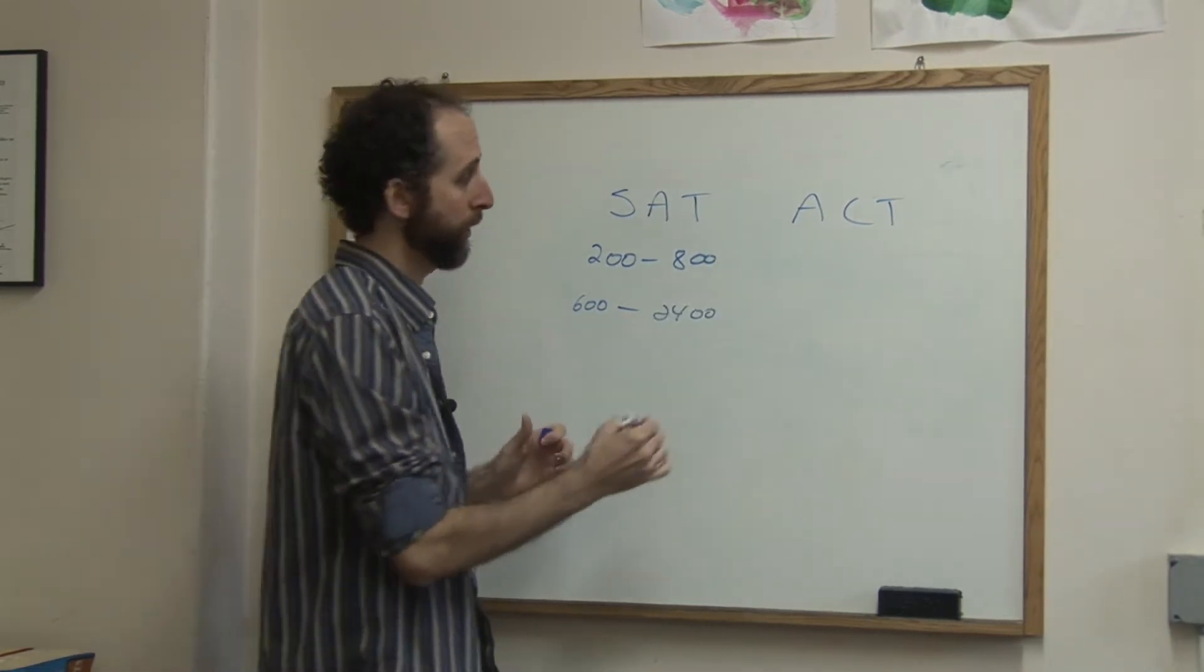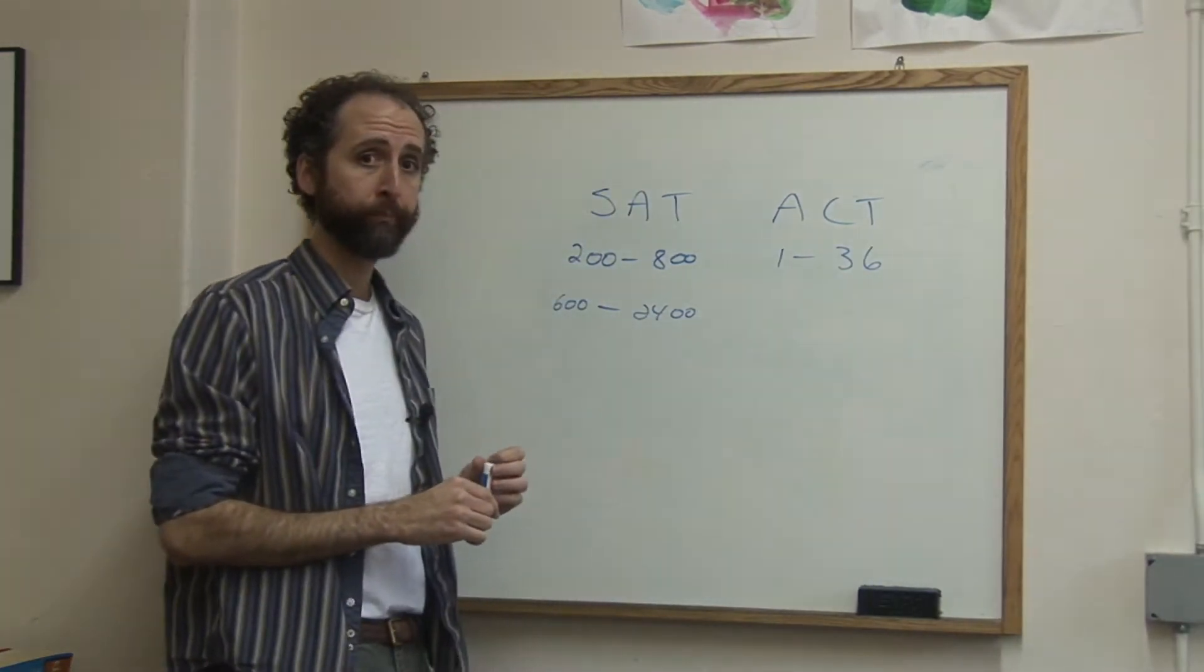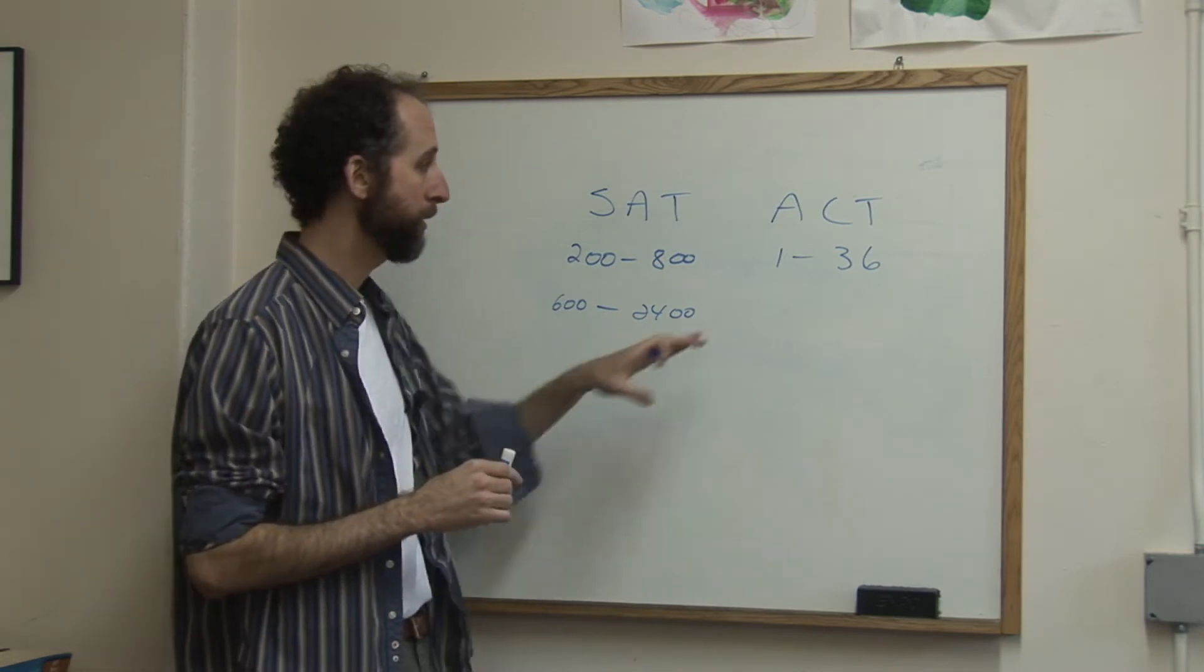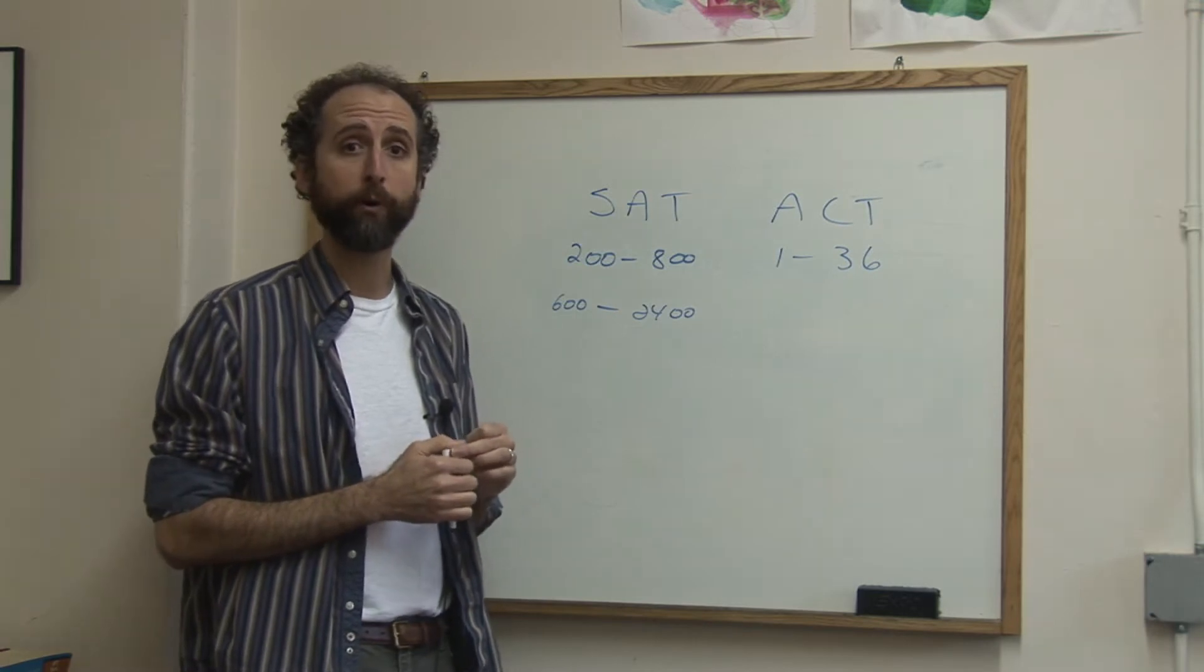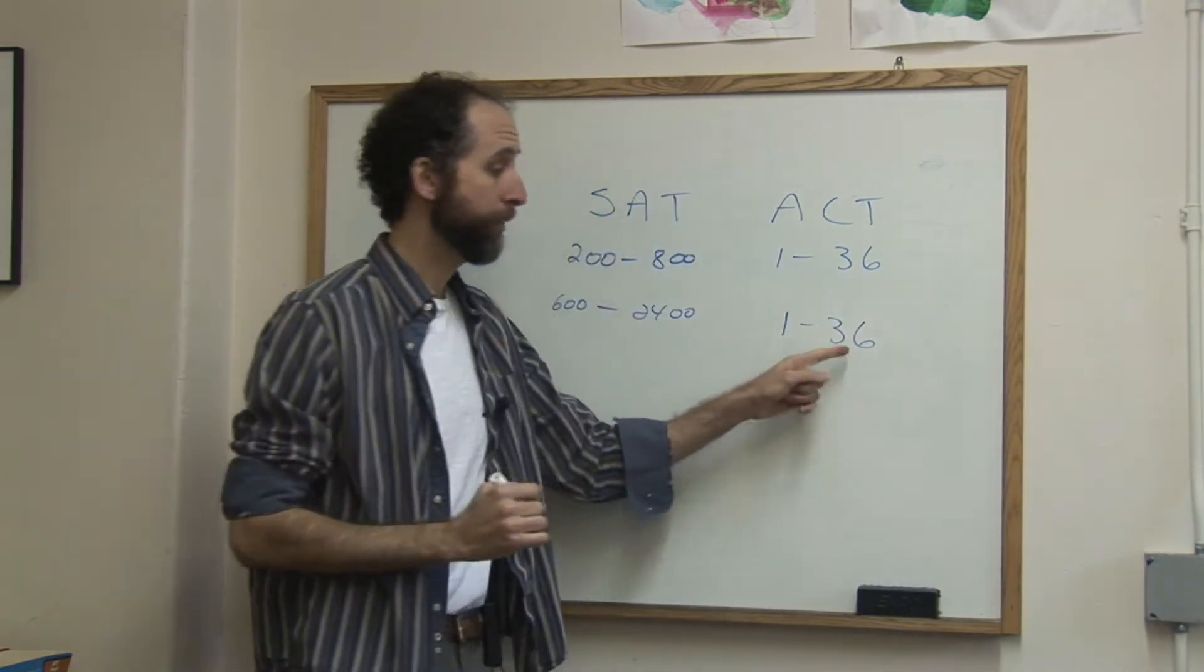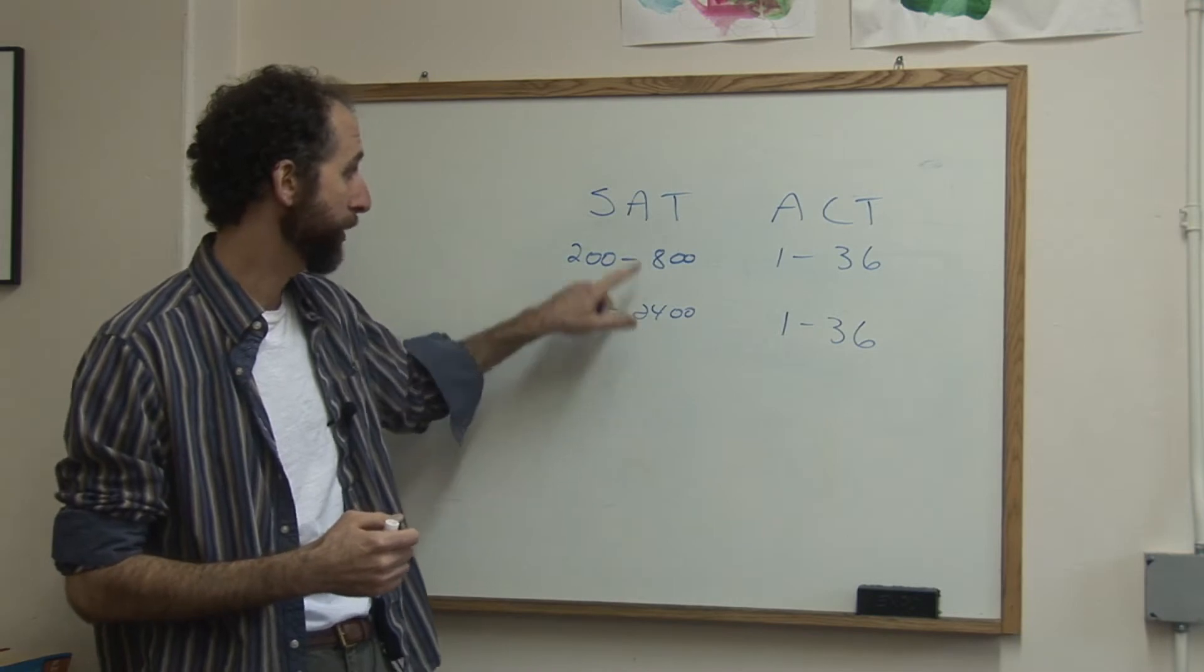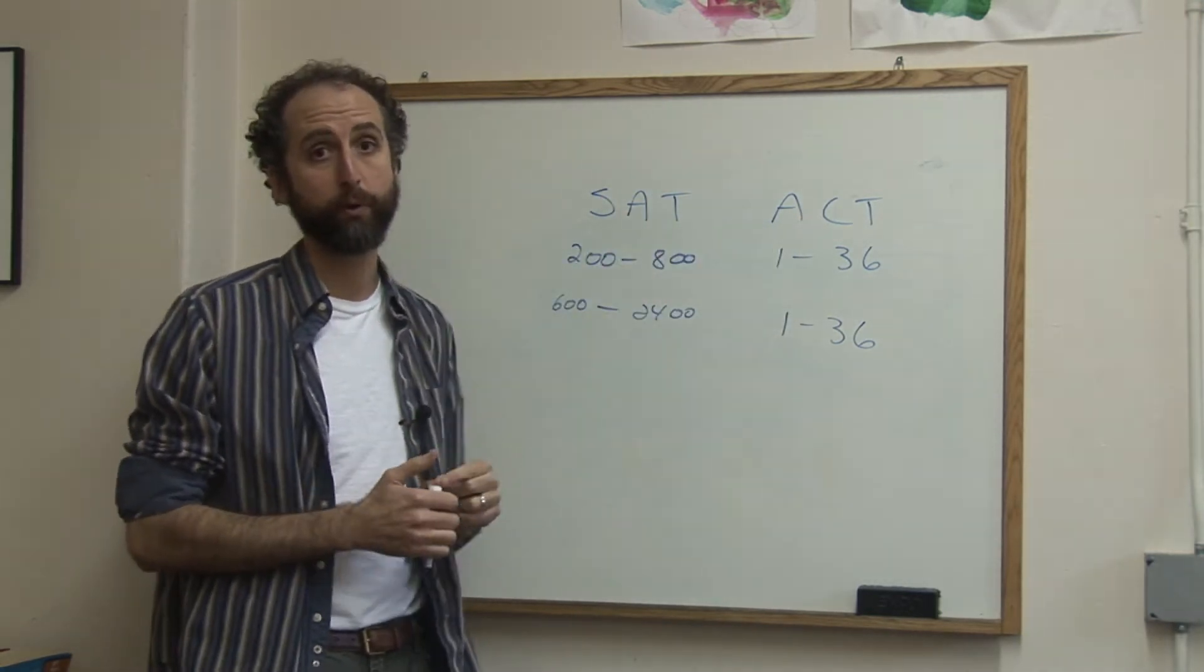The ACT goes 1 through 36 for each section. There's four sections on the ACT, and then of the four sections, they just add those four up and divide by four, and that's your composite score. So your composite score is also going to be between 1 and 36, 36 being a perfect score. Obviously, a 2400 on the SAT and a 36 on the ACT correspond. Those are both perfect scores.